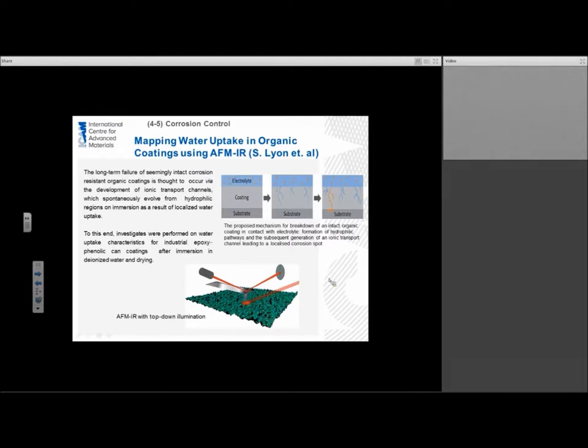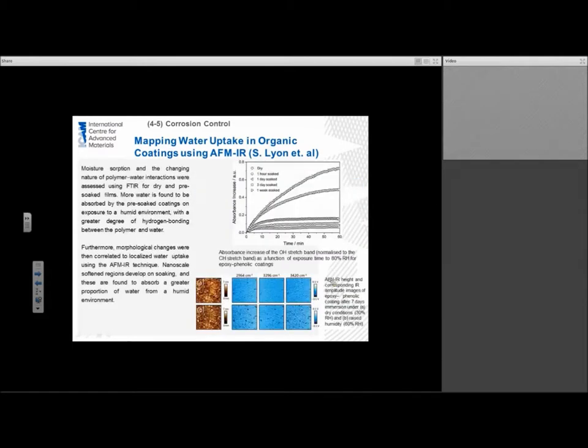The proposed mechanism for breakdown of this intact organic coating is basically the formation of a hydrophilic pathway that generally goes through the material, the coating, and then channels to a location leading to a localized corrosion spot and eventual breakdown of the coating. What Stuart's been doing, he's been using this AFMIR technique to look at water uptake characteristics on an epoxy phenolic tan coating. He's been looking at it either in immersion in deionized water or in relative humidity levels. If you take a look at the top right figure, we see a figure of absorbance increase versus time. This is done for a dry material, a coating that's been soaked for one hour, one day, three days, and one week.